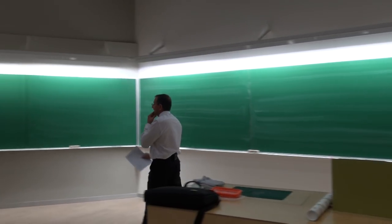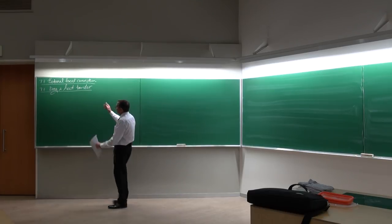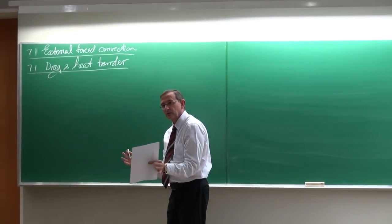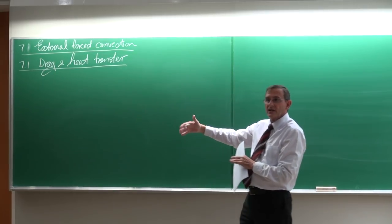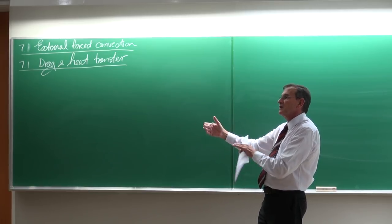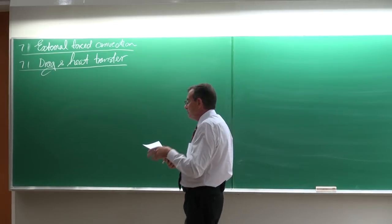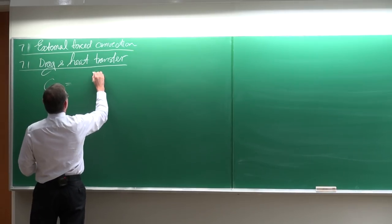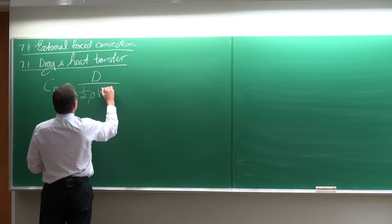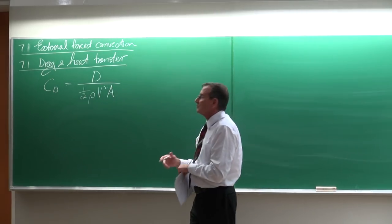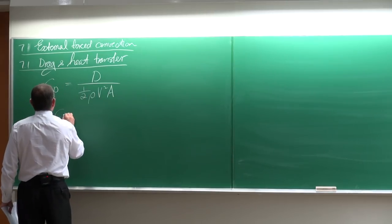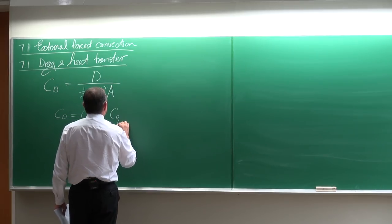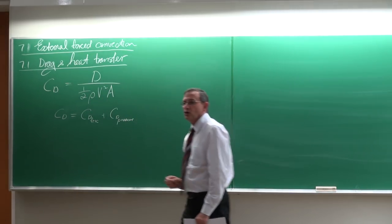In terms of the first paragraph, drag and heat transfer, like the previous chapter, there's a lot of revision of fluid mechanics. The drag coefficient can be written as the drag force divided by half rho V squared multiplied by A. This drag coefficient is the combination of the friction drag coefficient and the pressure drag coefficient.